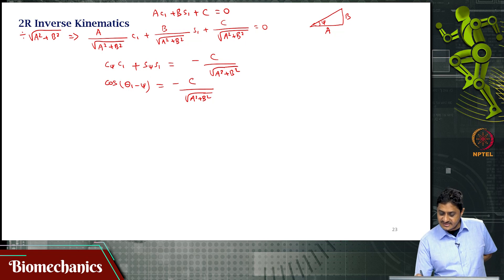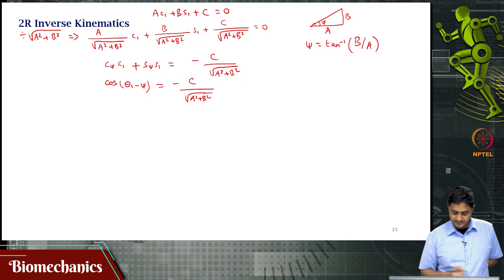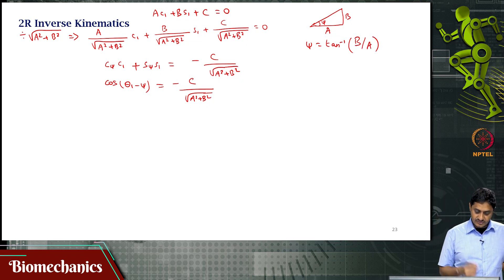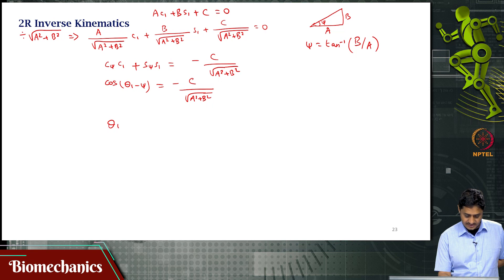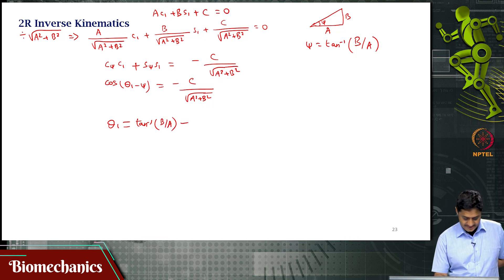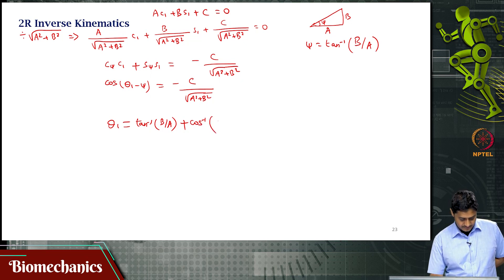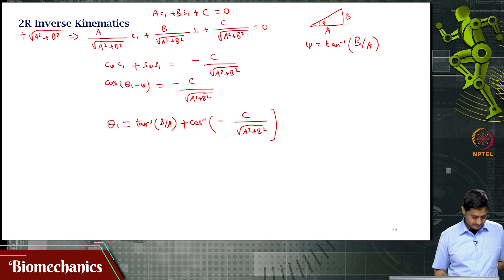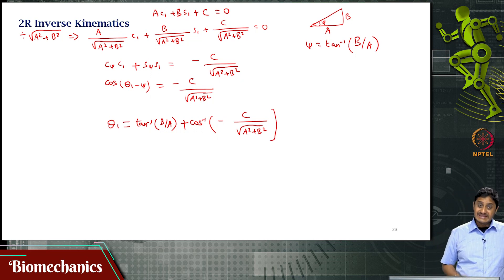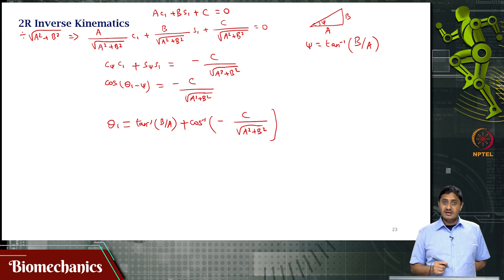Here ψ = arctan(B/A). So if I want θ1, I get it as: θ1 = arctan(B/A) + arccos(−C / √(A² + B²)). This is the value of the first joint angle θ1.